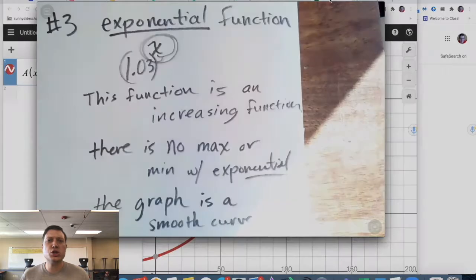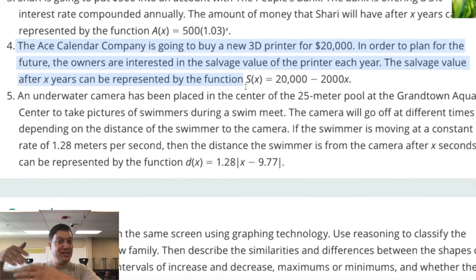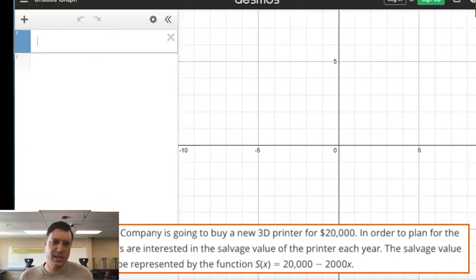And then last of all, is it a smooth curve? And so this is a smooth curve because your money trickles up, pennies to dollars at a time. And for that reason, it's a smooth curve.